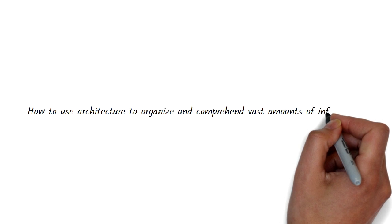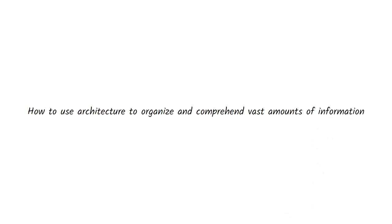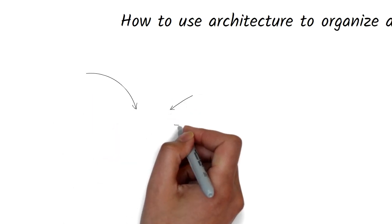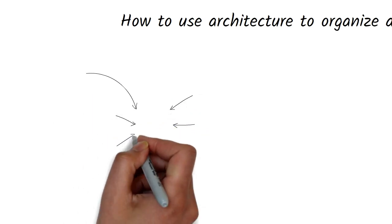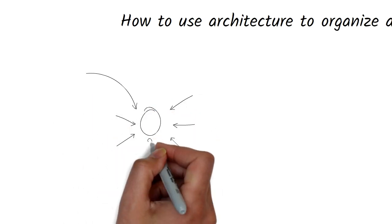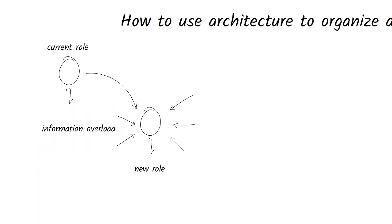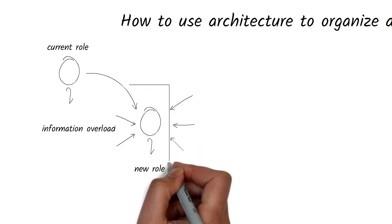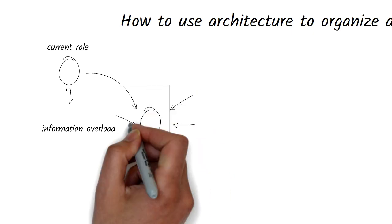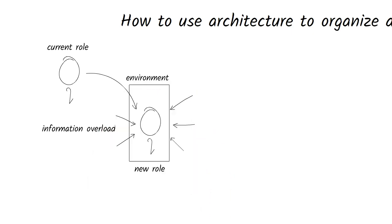How to use basic architecture to organize and comprehend vast amounts of information? Often you might find yourself in a position where you have to consume and understand vast amounts of information — maybe a new job, a new role within your company, or a new assignment. Your first task is to quickly understand your environment so you can operate well within it. How do you do that?